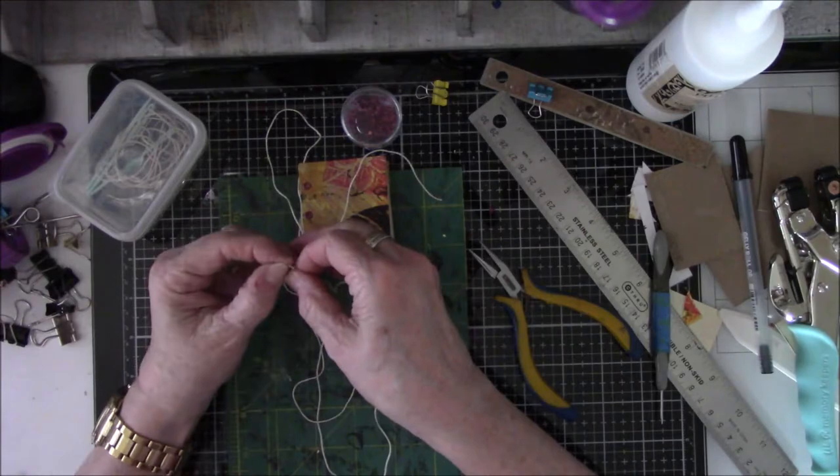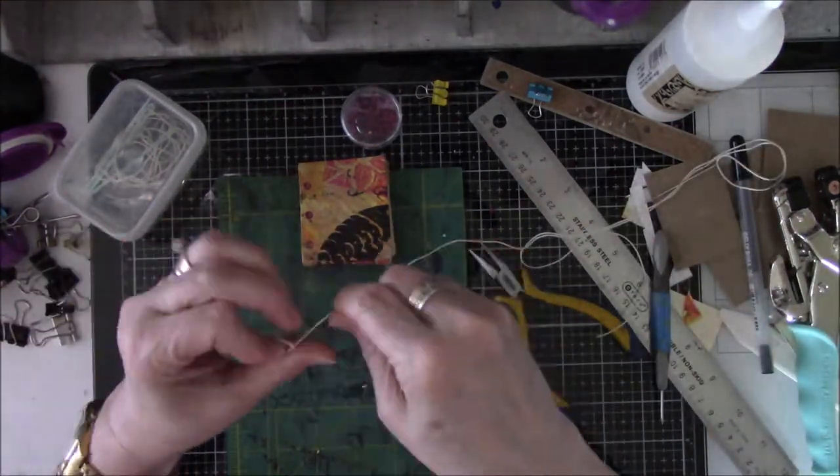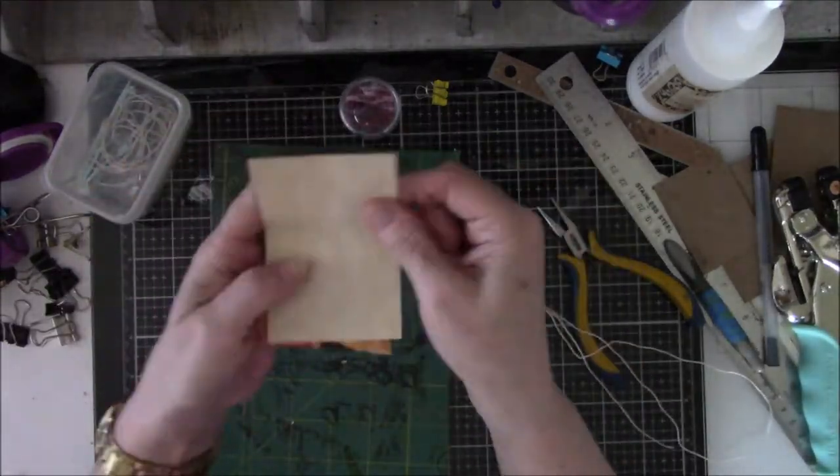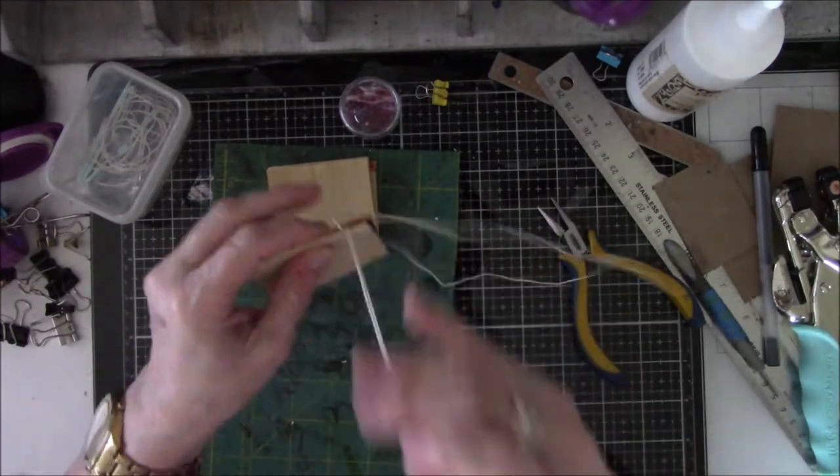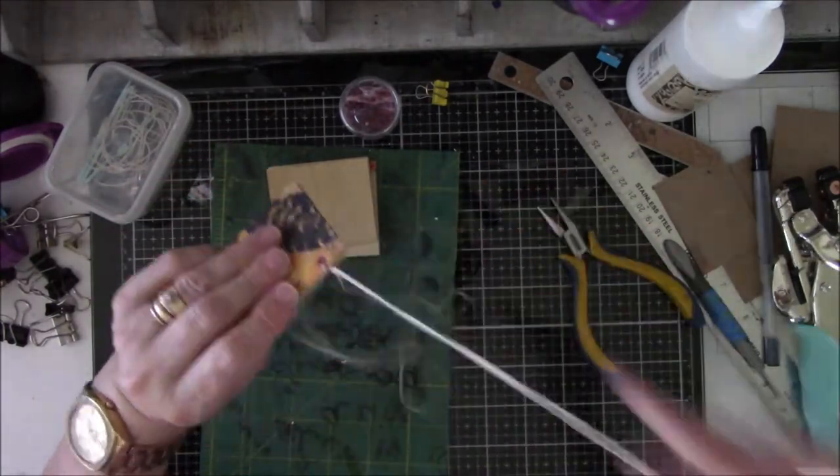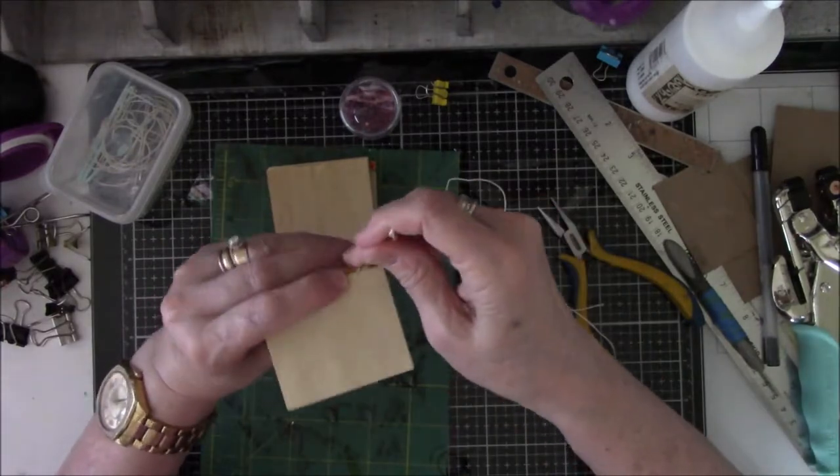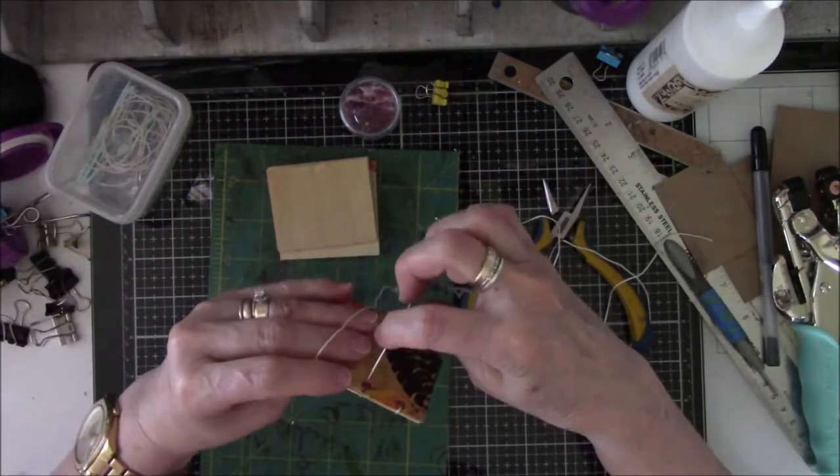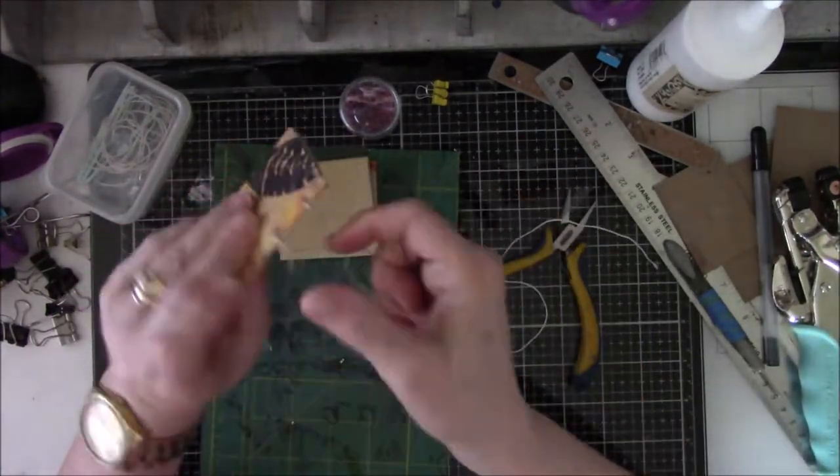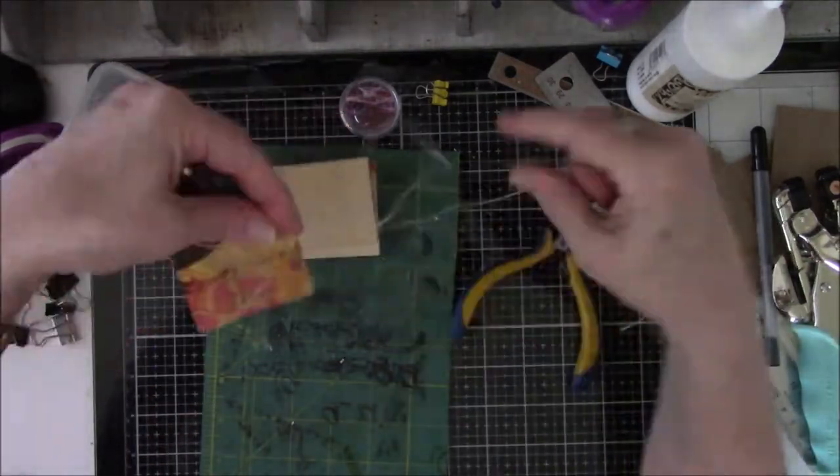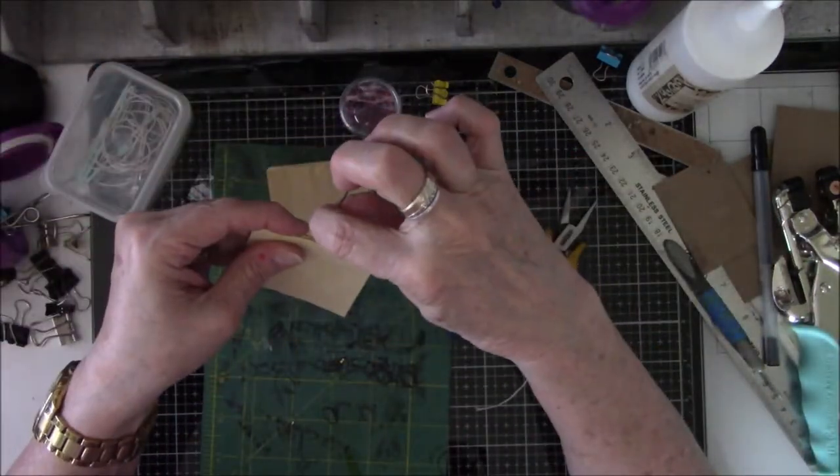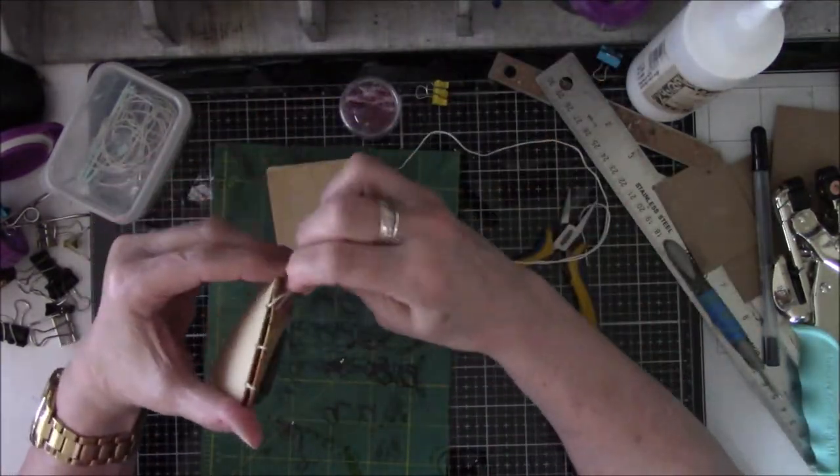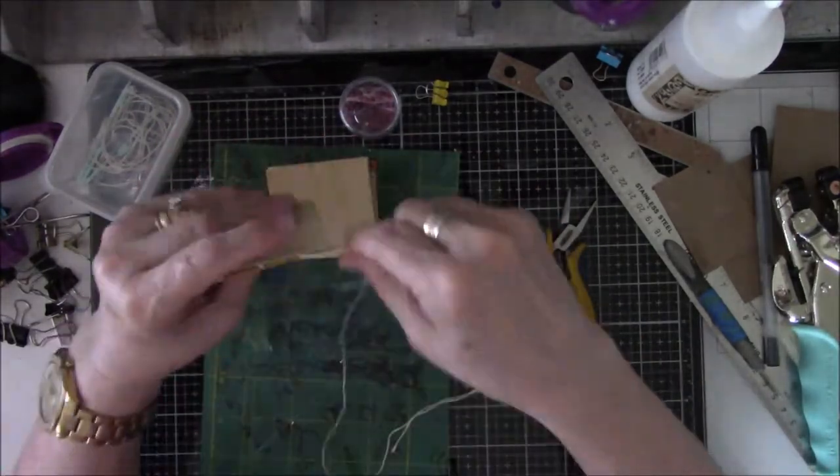This is the same thread that I used - it's a number five thread from DMC in a crew color, the same stuff I used on the larger book. This will be very simple to do because essentially you're only sewing three signatures. The front signature and back signature, you sew the covers on while you're doing the signature, so you're killing two birds with one stone. Then you have the middle signature that's on its own.